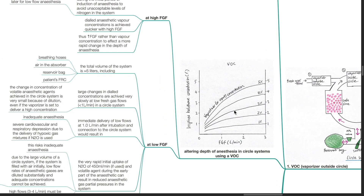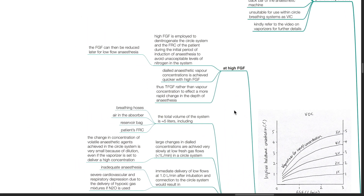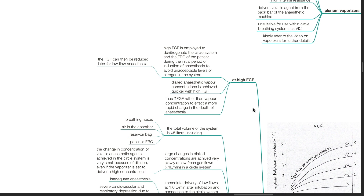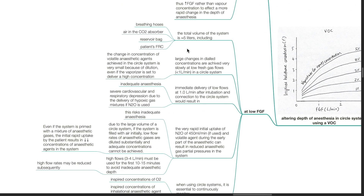Altering the depth of anesthesia in circle systems using a VOC. At high fresh gas flow rates, high FGF is employed to denitrogenate the circle system and FRC of the patient during the initial period of induction of anesthesia, to avoid unacceptable levels of nitrogen in the system. The fresh gas flow can then be reduced later for low flow anesthesia. Desired anesthetic vapor concentrations are achieved quicker with high fresh gas flow; thus increase FGF rather than vapor concentration to effect a more rapid change in depth of anesthesia. At low FGF, the total volume of the system is about 5 liters, including breathing hoses, air in the CO2 absorber, reservoir bag, and the patient's functional residual capacity. Large changes in dialed concentrations are achieved very slowly at low fresh gas flows of less than 1 liter per minute.